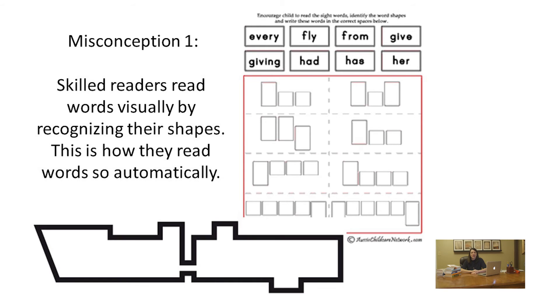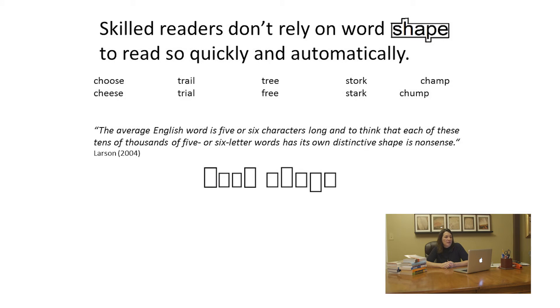Imagine having to memorize all the words that look alike. No wonder so many kids come to the first letter of a word and then make a guess. The average English word is five or six characters long, and to think that each of tens of thousands of five or six letter words has its own distinctive shape is nonsense — that's Larson, 2004. Word shape is no longer a viable model of word recognition. The bulk of scientific evidence says we recognize a word's component letters and use that visual information to recognize a word.